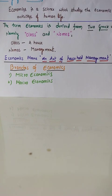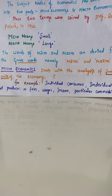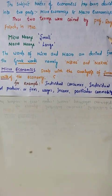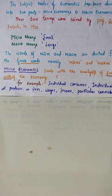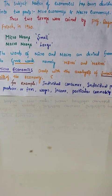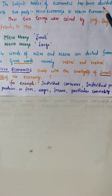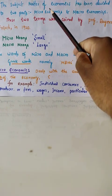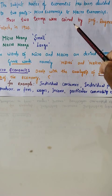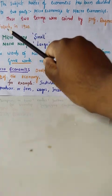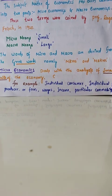How do we justify the meaning of micro and macroeconomics? The subject matter of economics has been divided into two parts by Professor Ragnar Frisch at the time of 1920. These two terms — micro and macroeconomics — were coined by Professor Ragnar Frisch in 1920.